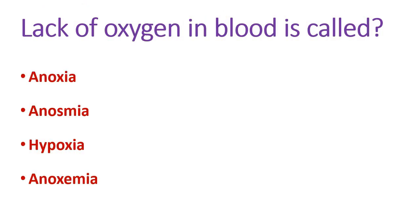Next question: lack of oxygen in the blood is called — options are anoxia, anosmia, hypoxia, and anoxemia. Lack of oxygen in the blood is known as anoxemia. Anoxia means lack of oxygen in the tissue. Anosmia means lack of ability to smell, related to the olfactory nerve. The suffix '-emia' refers to blood.